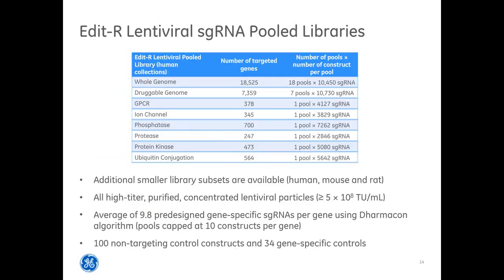Similar to our SmartVector pooled libraries, we have multiple Editor lentiviral sgRNA pooled libraries for human, mouse, and rat. Smaller library subsets are also available, and custom pools can be made upon request. The sgRNA libraries are provided as high-titer purified concentrated lentiviral particles with a titer greater than 5×10⁸ transducing units per mL. Pools have an average of 9.8 pre-designed sgRNAs per gene using our Dharmakon Editor algorithm, with multiple negative and positive controls included.